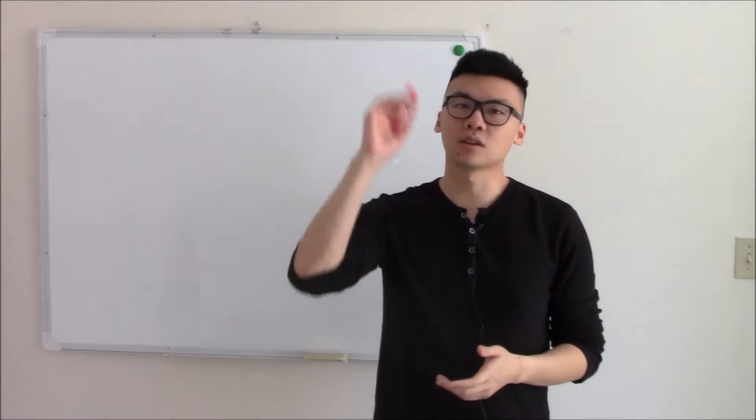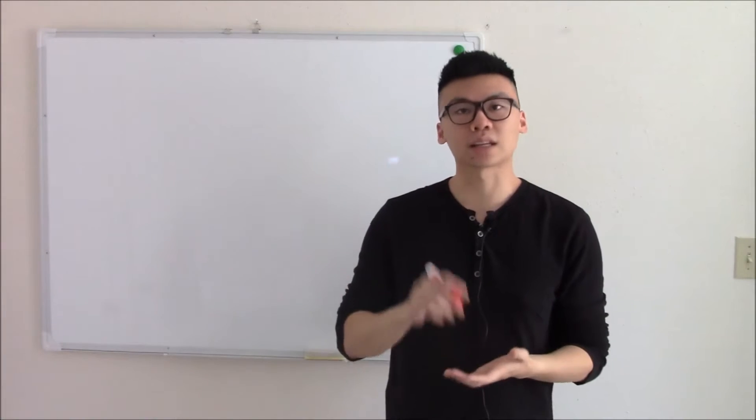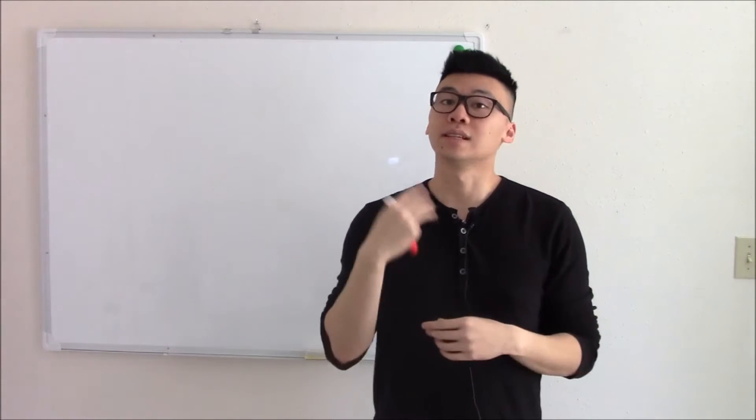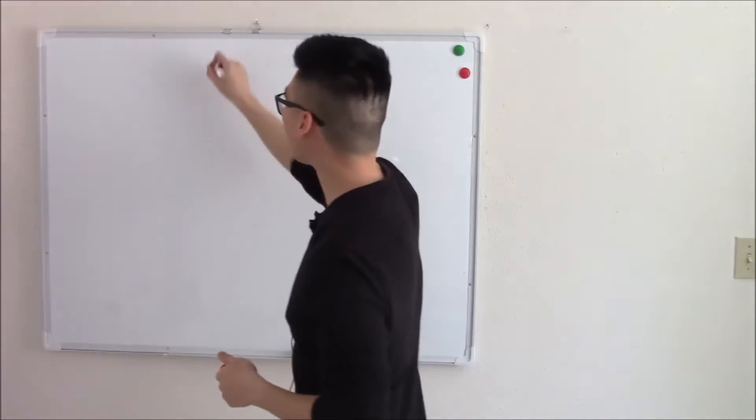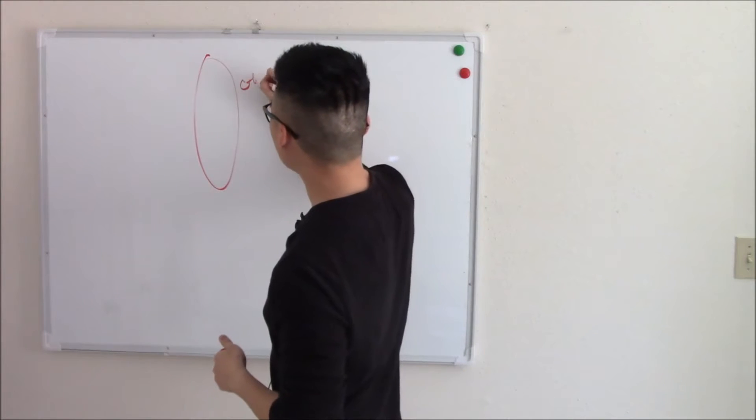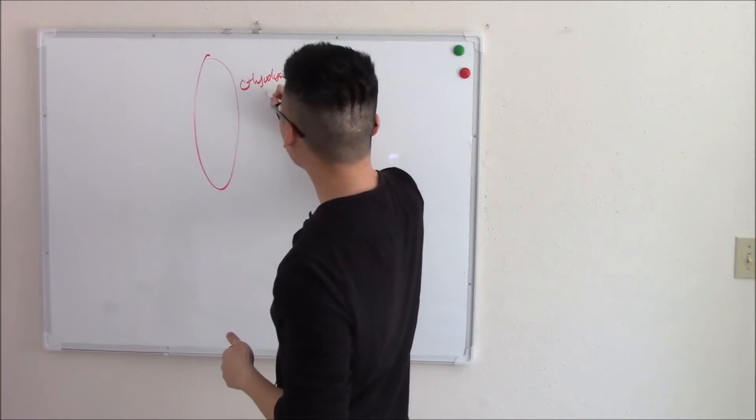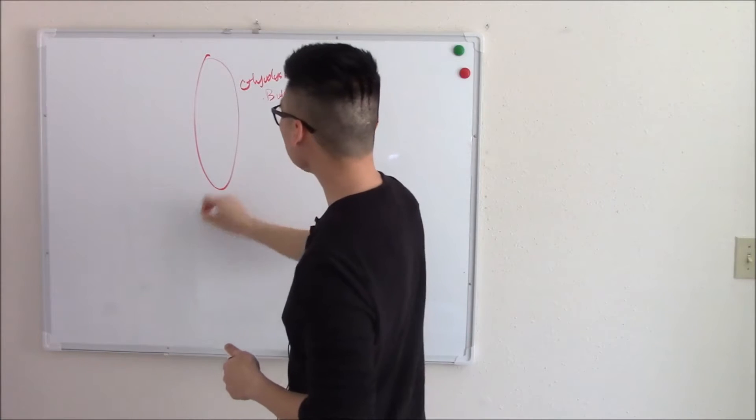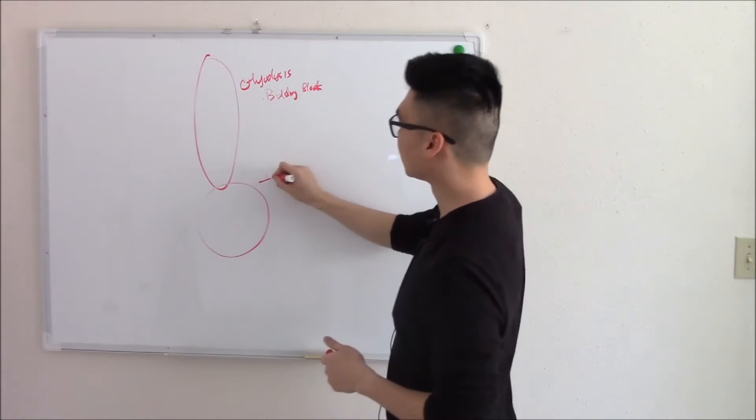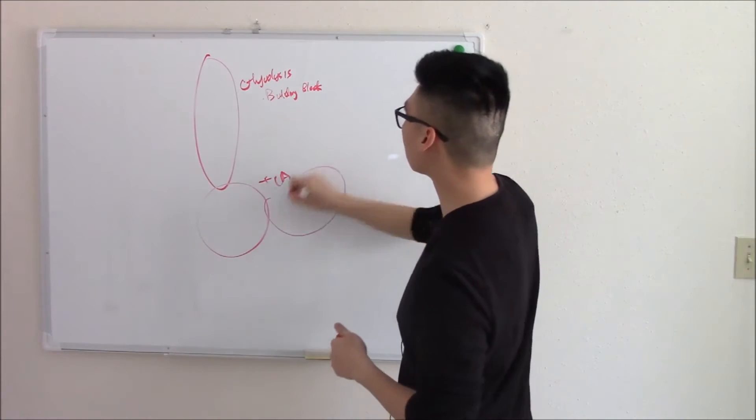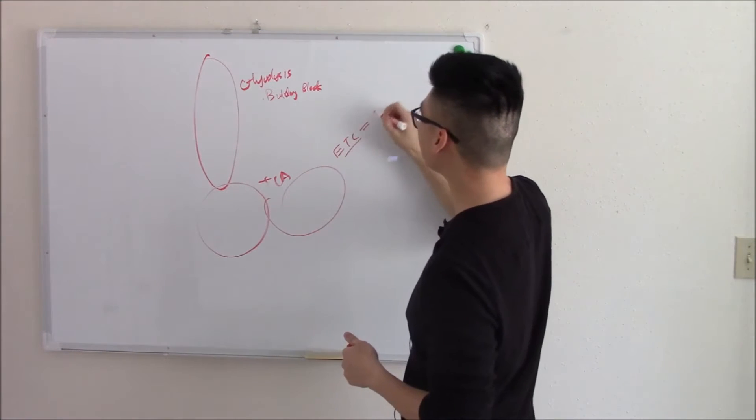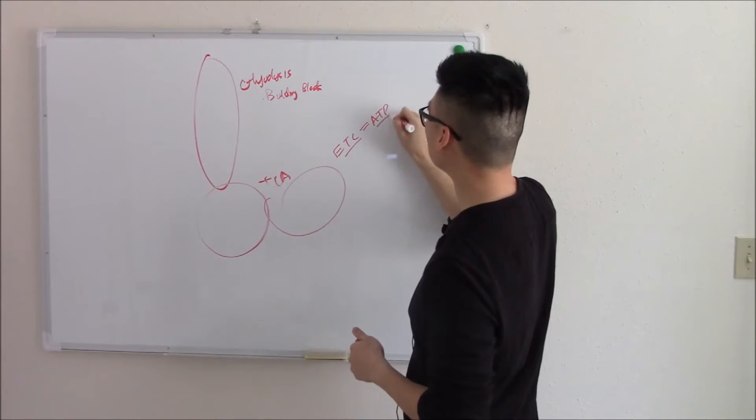This video is going to be all about breaking glucose down to its building block and using that building block to form ATP. Now that whole cycle is three parts actually. The first part is going to be glycolysis, which is breaking it down to its building block. The second part is going to be your TCA cycle. And then the last part is going to be your electron transport chain or your ETC. And this is where you make ATP.